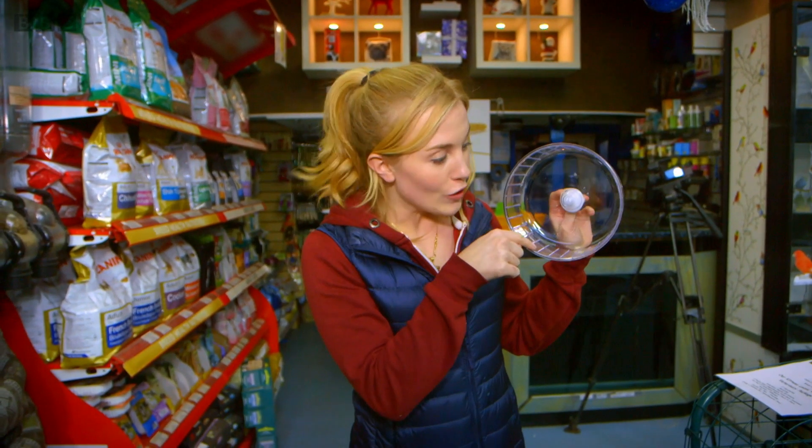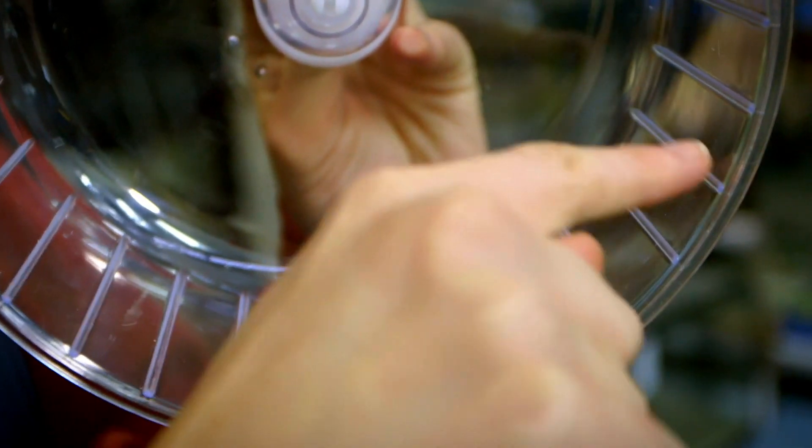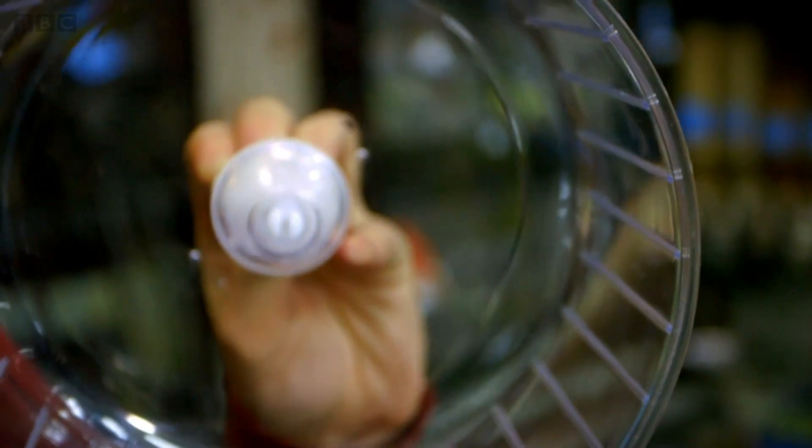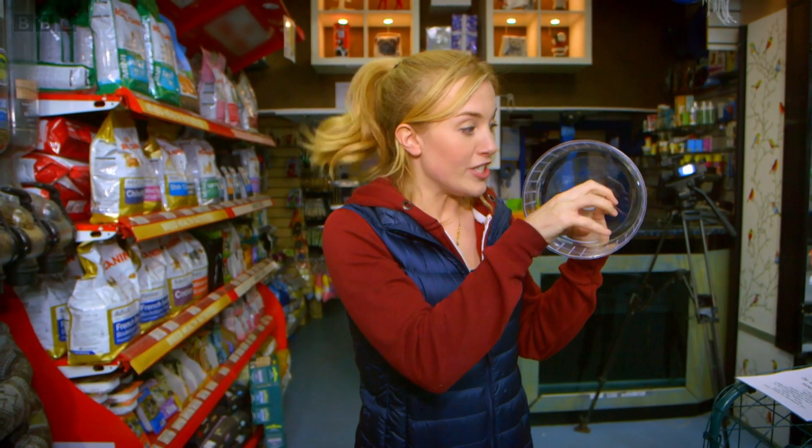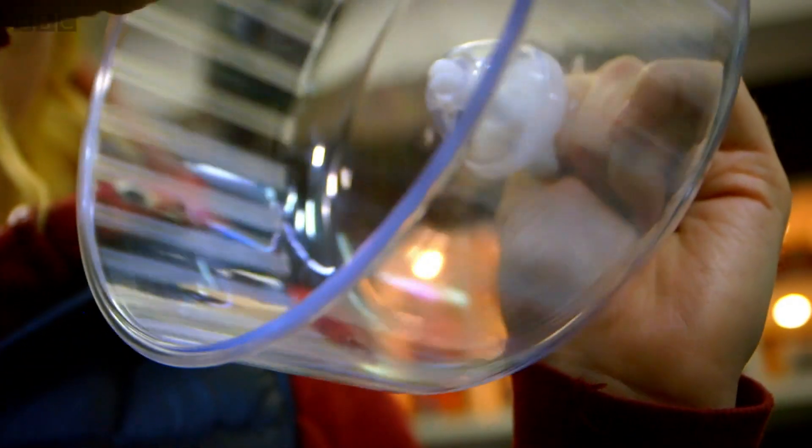And can you see, if you look closely, these little ridges on the inside of the running track? This is where a hamster uses its paw to grip onto the ridges and pushes the wheel around and round.